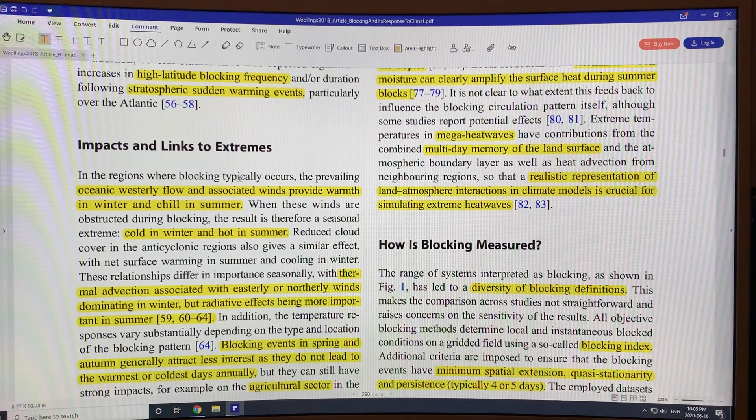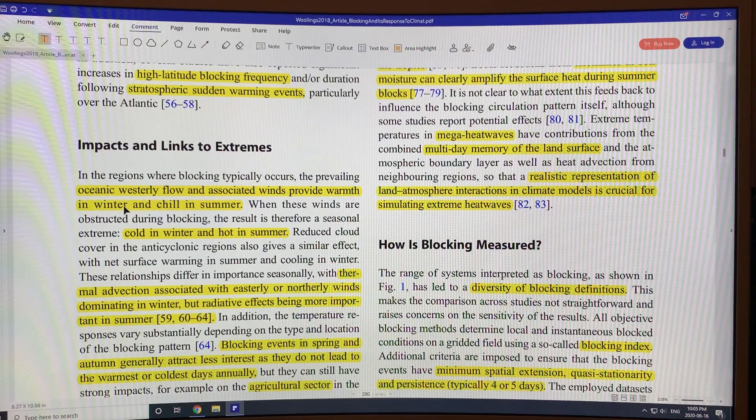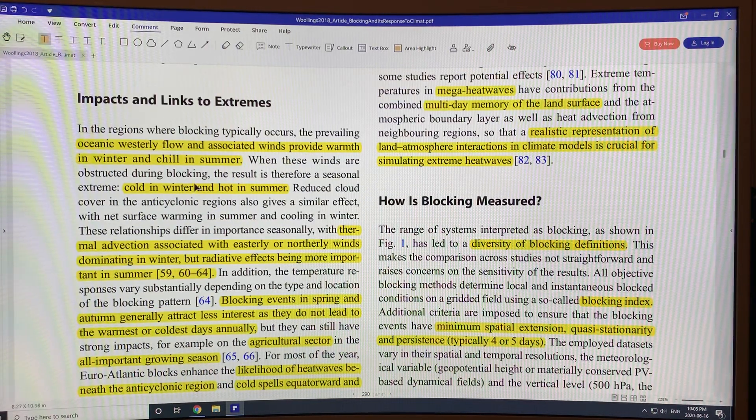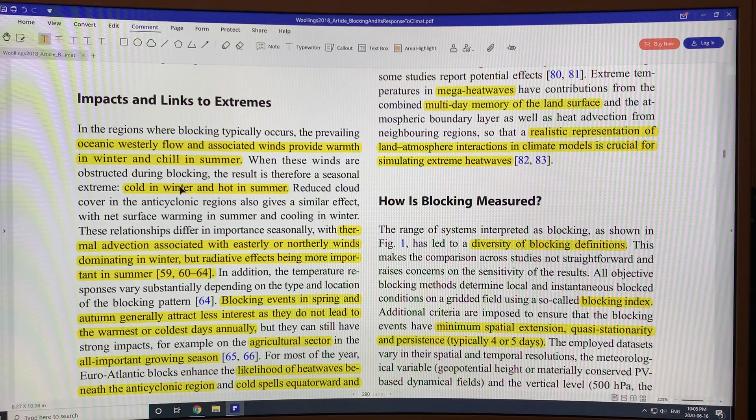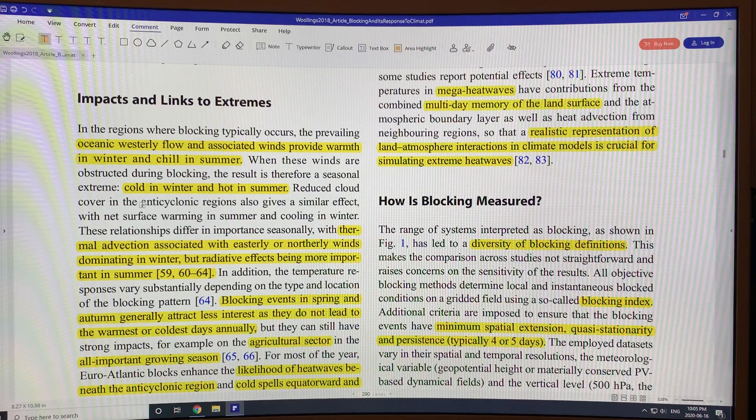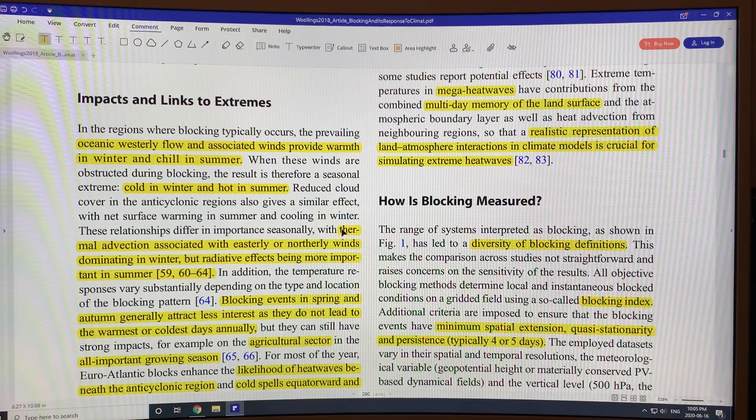Where blocking occurs, the oceanic westerly flow and the associated winds provide warmth in the winter and chill in the summer. Because these winds are obstructed during blocking, we get a seasonal extreme. So we can be very cold in the winter from a block, very hot in the summer. Reduced cloud cover in the anticyclonic or high pressure region causes net warming in summer, cooling in winter.